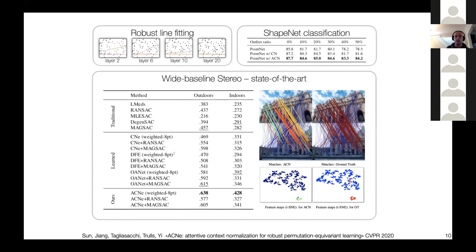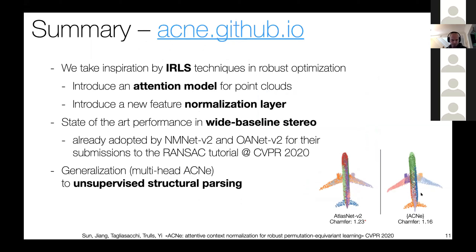The most important application is Y-Baseline Stereo, where we currently have state of the art. The network decides among putative correspondences which ones are useful — not in a single step, but starting from a hypothesis and refining it down to the correct solution, just like robust optimization. In summary: we're inspired by iteratively reweighted least squares, we introduced a permutation equivariant attention model for point clouds, and a simple normalization layer giving 3–7% performance gains across all applications. The code is available at acne.github.io.